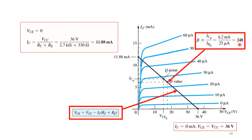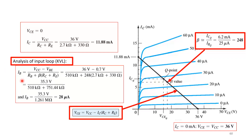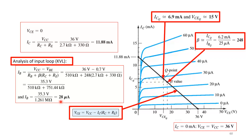With IB = 28 µA found from the input loop, we locate the IB = 28 µA curve on the output characteristics and find its intersection with the load line. The operating point is approximately ICQ = 6.9 mA and VCEQ = 15V. This is how we handle the situation when beta is unknown — as long as we have the output characteristics and the bias circuit, we can determine the Q-point.